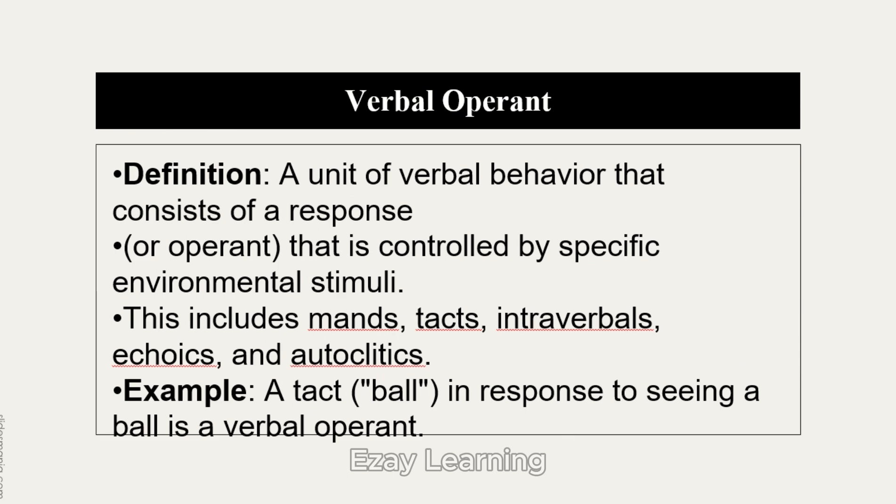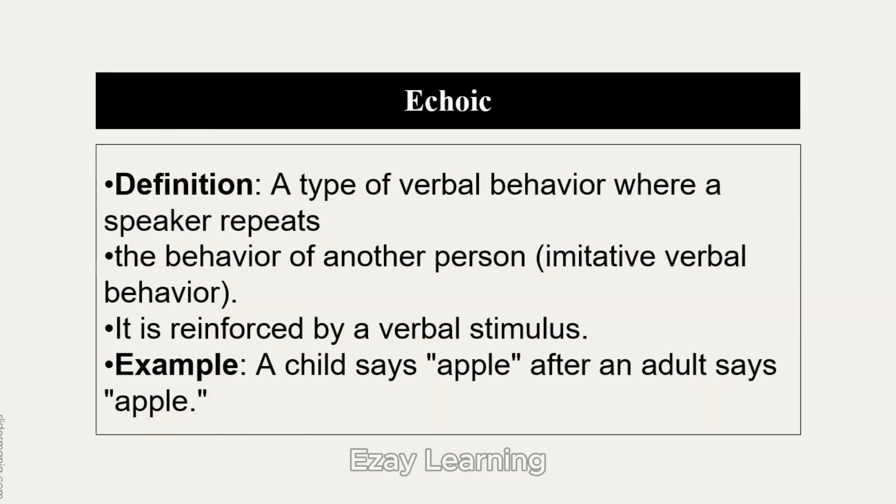A verbal operant is a unit of verbal behavior that consists of a response or operant controlled by specific environmental stimuli. When a specific environmental stimulus is present, a verbal behavioral response to that stimulus is called a verbal operant. This includes mands, tacts, intraverbals, echoics, and autoclictics. For example, saying 'ball' in response to seeing a ball — the environmental stimulus was seeing the ball, and the verbal response was saying, writing, or gesturing toward 'ball.'